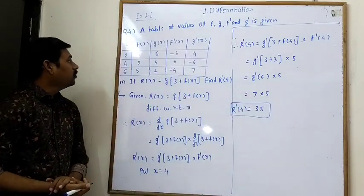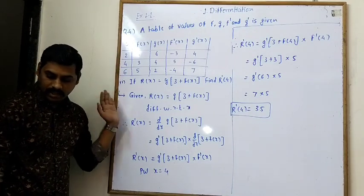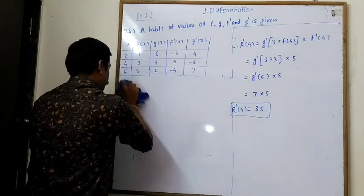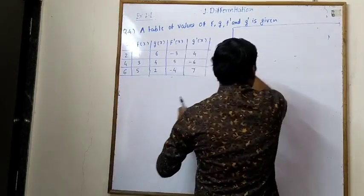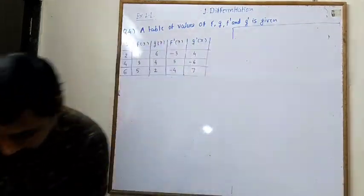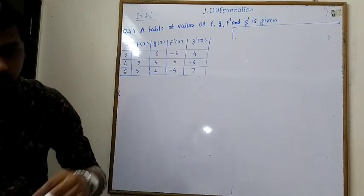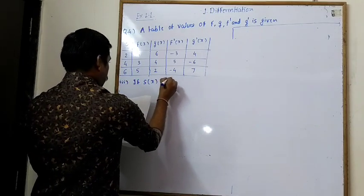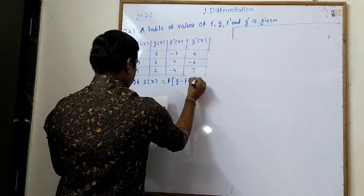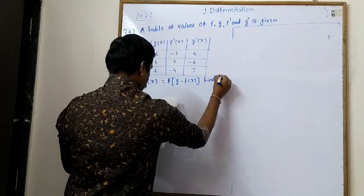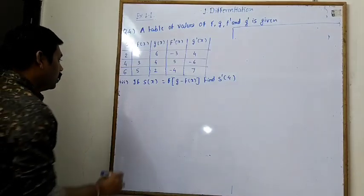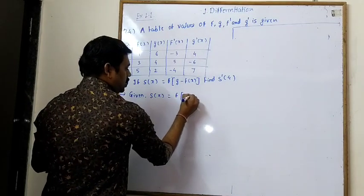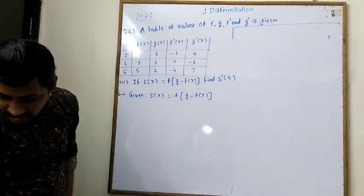That is r'(4). Example number 3: if s(x) = f(9 − f(x)), find s'(4).